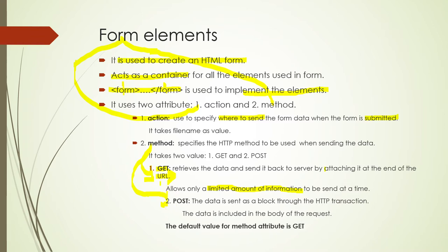The second method value is POST. POST sends information in an entire block with the help of an HTTP transaction. Because it sends a full block of data, we can send unlimited information using POST. The data is included in the body of the request and then sent. An important point: the default value of the method attribute is GET, meaning if you do not specify any method while creating a form, it will take GET as the default method.